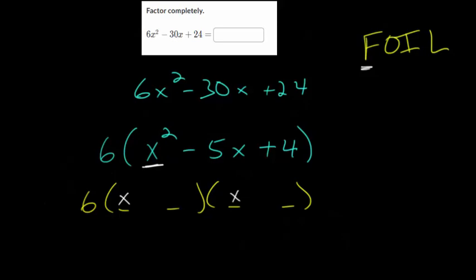The last ones multiply to give you this constant term positive four. Let's write out the possibilities: what numbers can multiply to become positive four? That could be 2 and 2, 1 and 4, or we can have the negative cases -1 and -4, and -2 and -2.